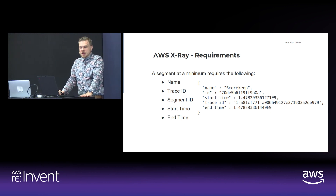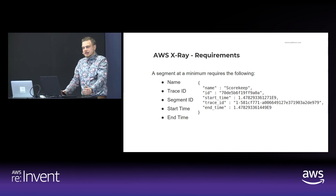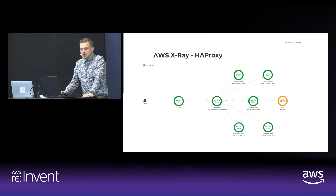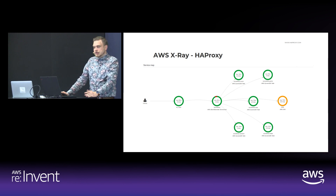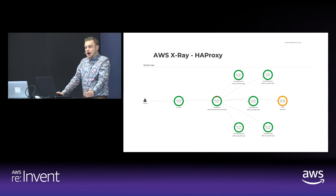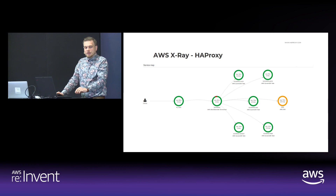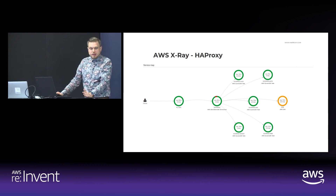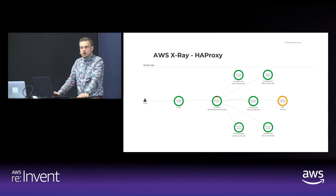A segment at a minimum requires a name, a trace ID, a segment ID, and a start and end time. One of our customers came to us and asked us to develop a solution which would allow them to integrate their HAProxy Enterprise install with AWS X-Ray. They wanted to use some of the observability data available within HAProxy and make it available within X-Ray. We're always open to satisfying our customer needs, so we went ahead and developed the following solution.